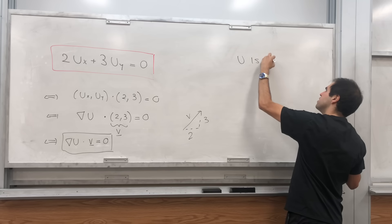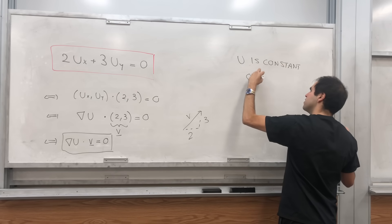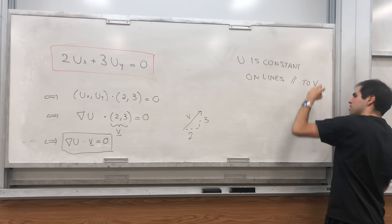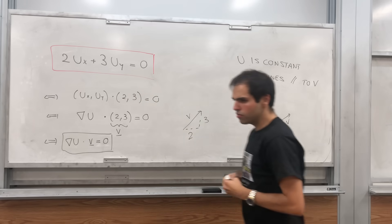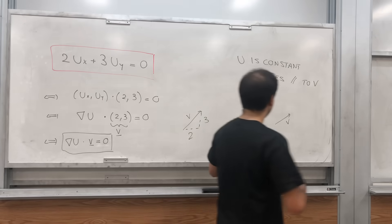So u is constant on lines parallel to v. For instance, this is the vector v, and whenever there's a line parallel to v, u has a certain value. So for instance, on this line, where u is parallel to this, u might be 2 here.